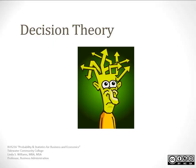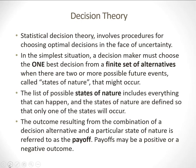Hey ladies and gentlemen, Professor Williams here and we're going to look at decision theory today. Decision theory is a statistical process that involves the procedures for choosing and making the optimal or best decisions in the face of an uncertain future. In the simplest of all scenarios, a decision maker is going to have to choose the one best alternative from a finite set of alternatives.